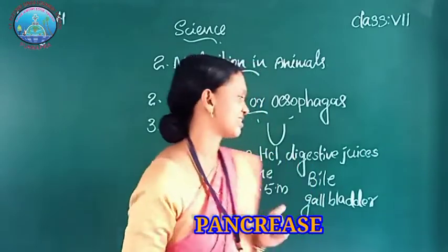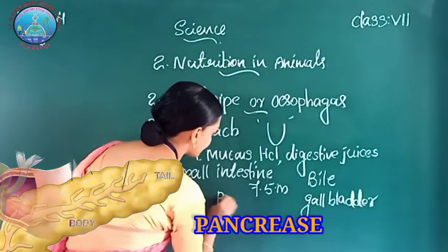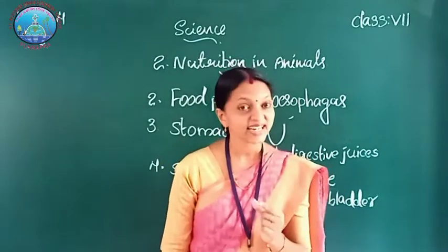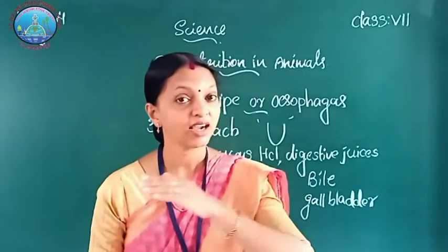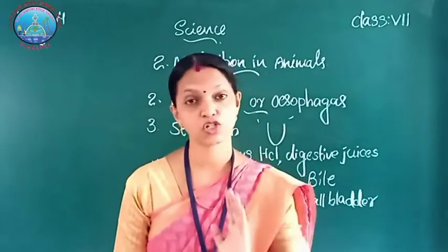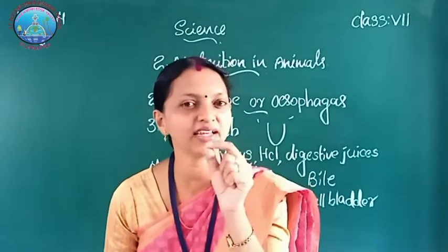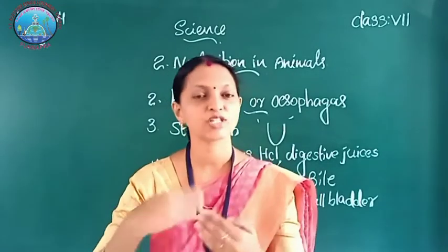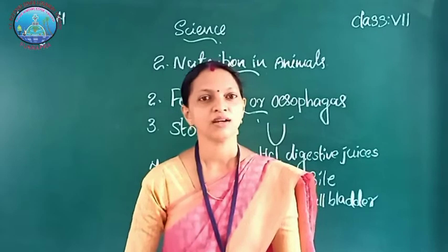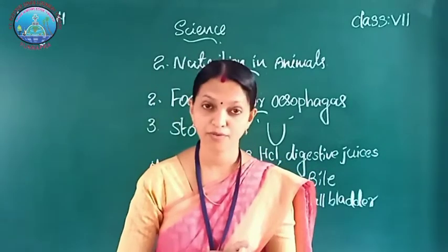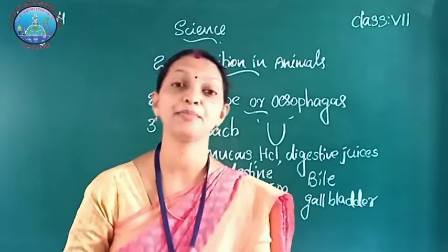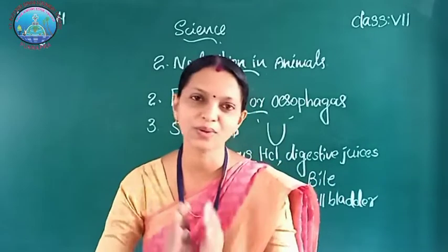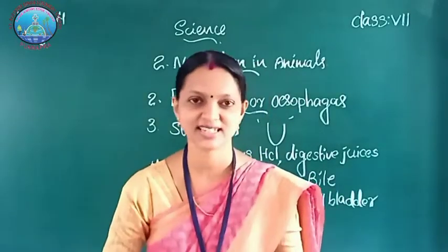Another organ is the Pancreas. The pancreas is a creamy-coloured organ located in the lower part of the stomach. It produces pancreatic juice, which converts complex components of food: carbohydrates are converted into glucose, fats into fatty acids, and proteins into amino acids.